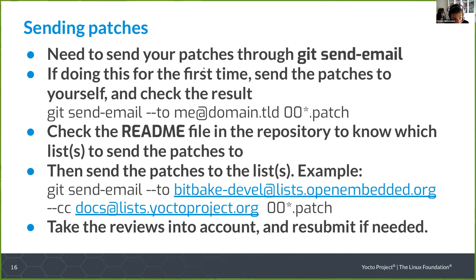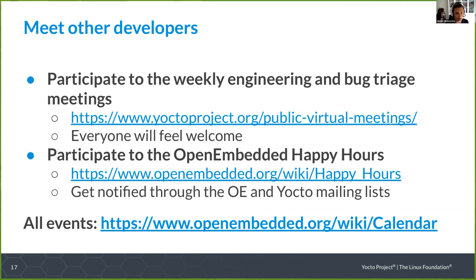To send patches, use git send-email — that guarantees patches will apply. A good idea is to send patches to yourself first to test, and once everything works, send them to the right mailing list found in the repository's README file. You'll get some reviews; take them into account and resubmit if needed, submitting a v2, etc. Be patient and take the reviews into account — that's important and it encourages reviewers to continue. Eventually you'll come up with a solution accepted by the community.